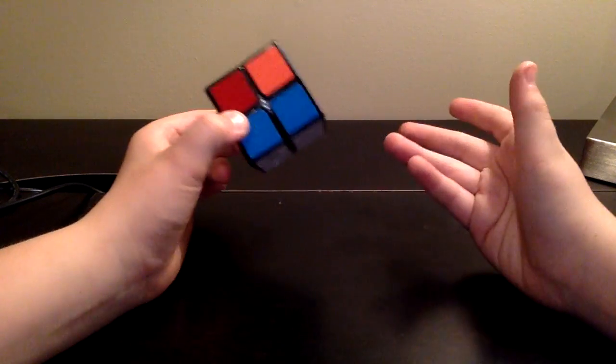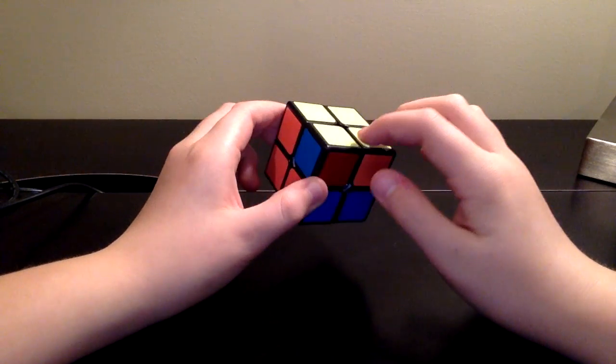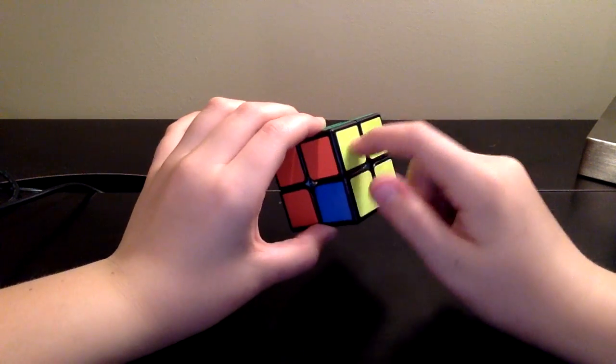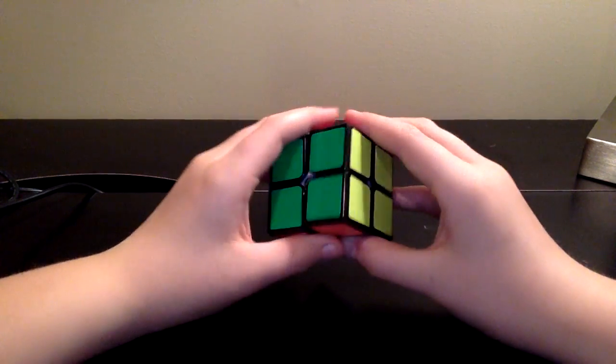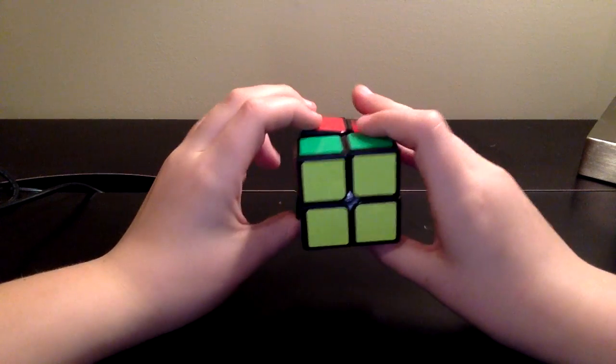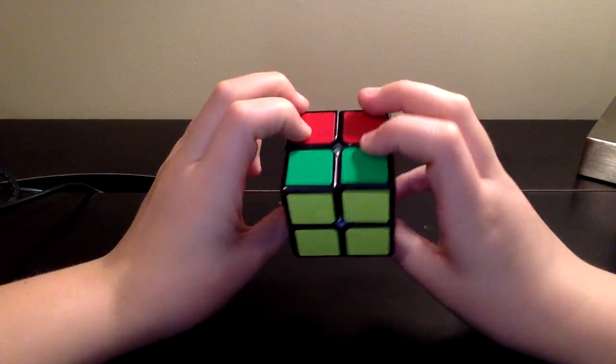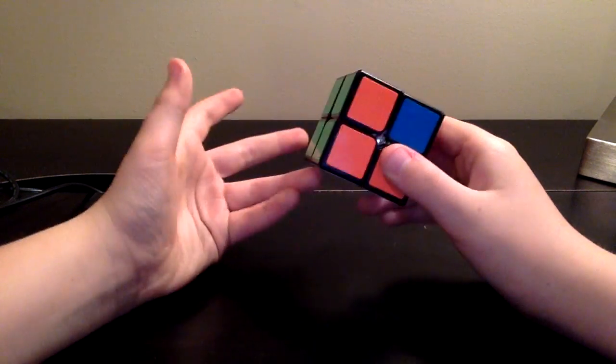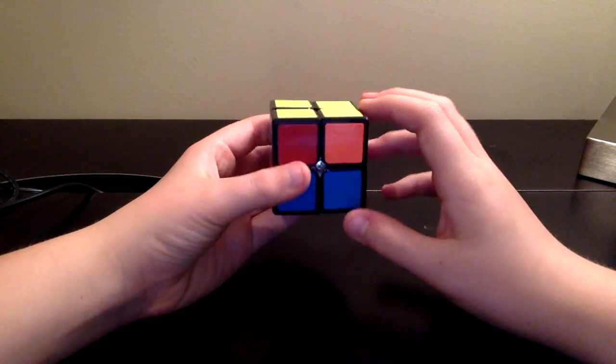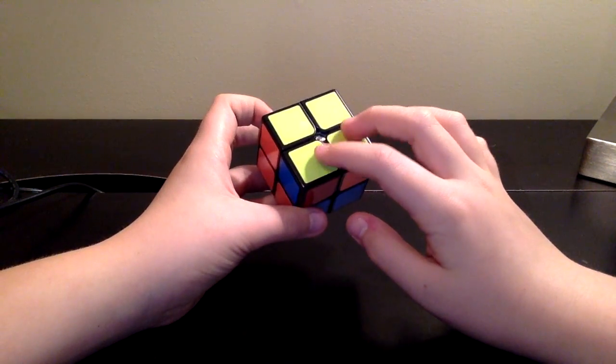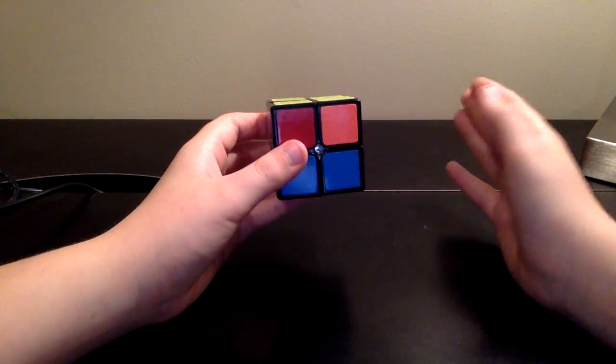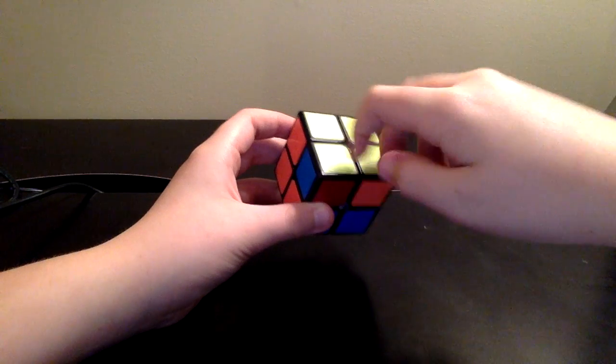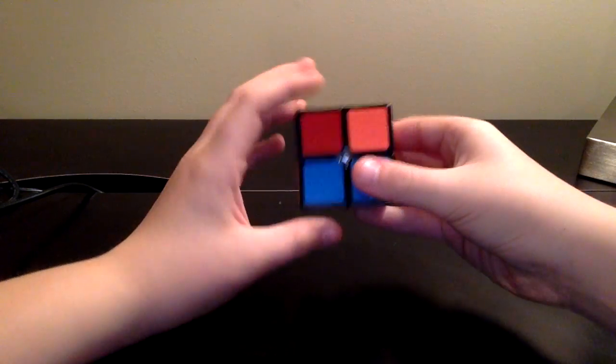And now this last step is called PLL, permuting the last layer. So there's two scenarios on here. This is the first one, you have this thing solved and you can line it up, like let's say you got this. But if you don't want to line it up, you can just stick it in the back like that. But some people prefer to line it up. I don't prefer to line it up, it wastes time for me. But if you are getting into speed cubing, I would recommend that you line it up. So then what this sequence does is it switches these two corners on the two by two.